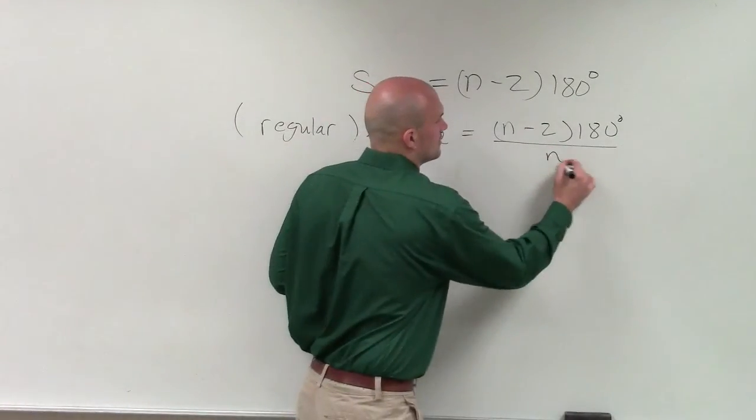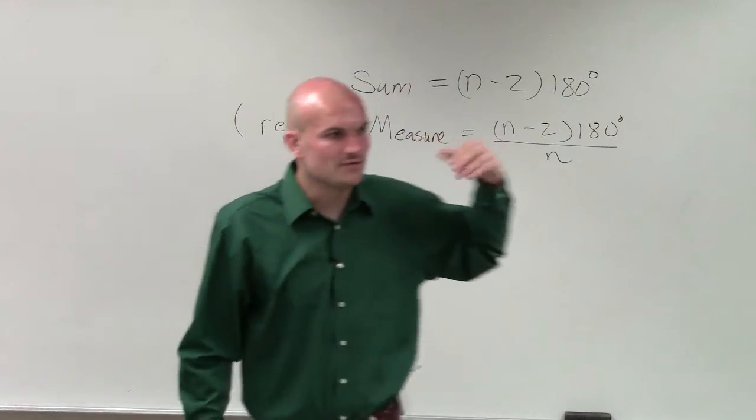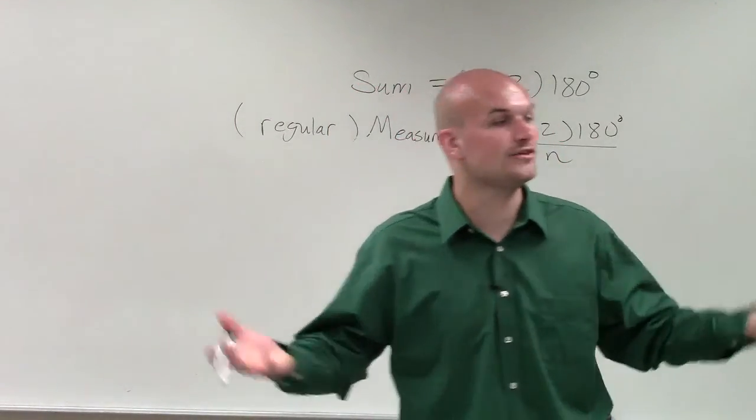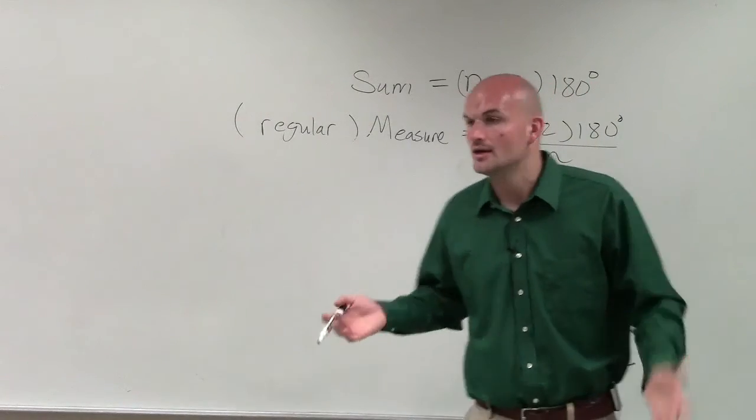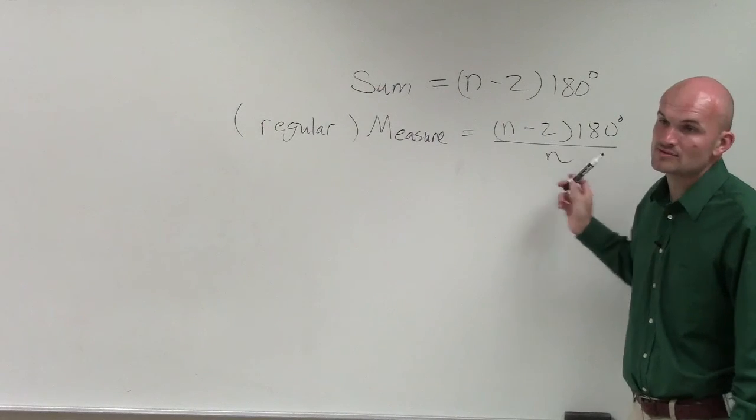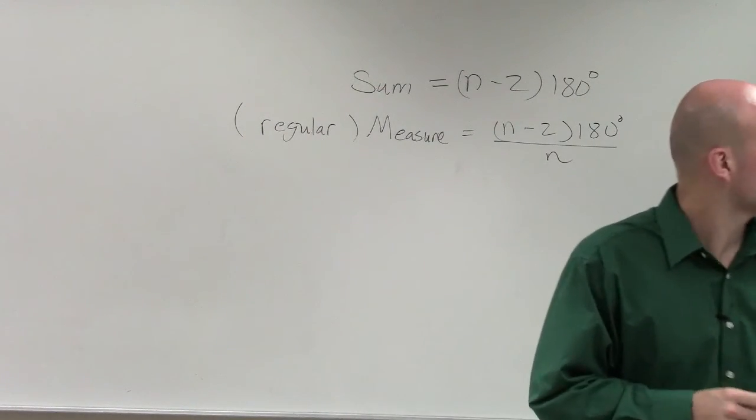n. So if you guys do n minus 2 times 180, that's going to tell you the sum of all the angles of a figure. But if I say, what is the measure of one angle, that's going to be n minus 2 times 180 divided by n. OK?